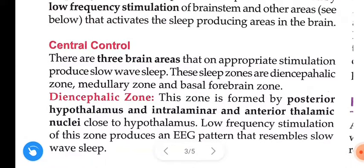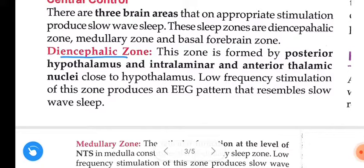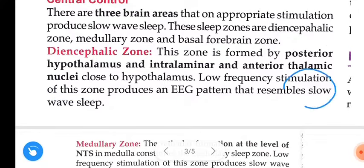Central control: there are three brain areas that on appropriate stimulation produce slow wave sleep. These sleep zones are the diencephalic zone, medullary zone, and basal forebrain zone. The diencephalic zone is formed by the posterior hypothalamus and intralaminar and anterior thalamic nuclei close to the hypothalamus. Low frequency stimulation of this zone produces an EEG pattern that resembles slow wave sleep.